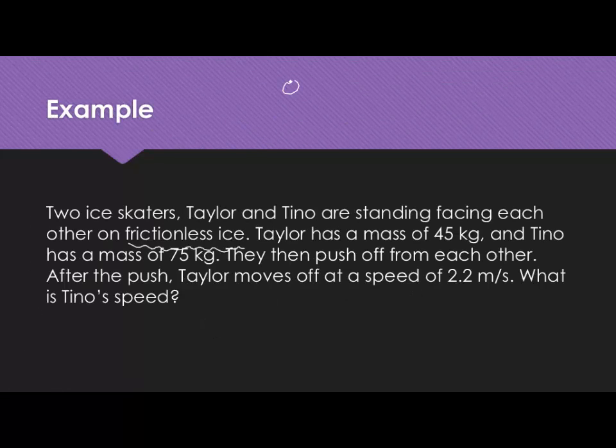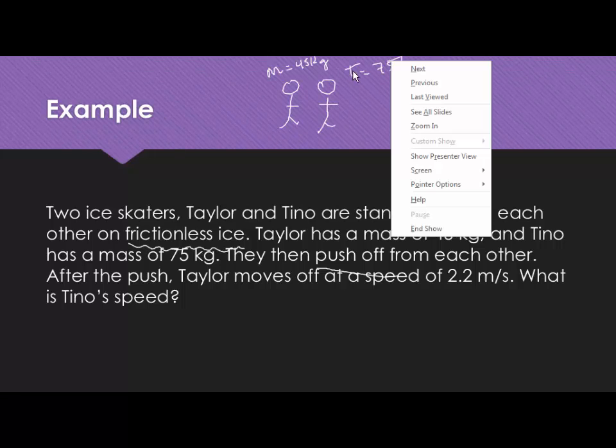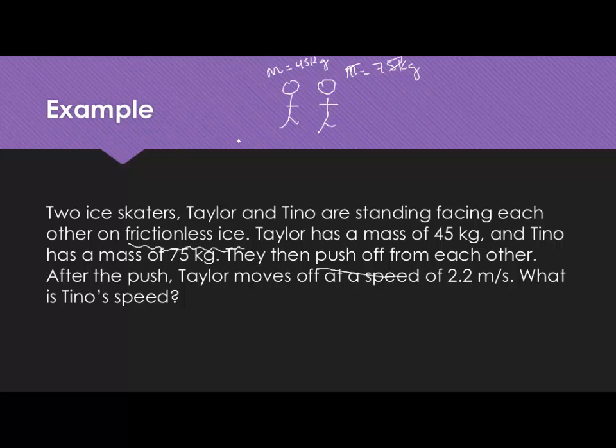There is just these two people standing facing each other and they are going to have an interaction between them being this push. They are going to push off from one another. There's not a third person outside pulling them apart or pushing them one way. Taylor's mass is 45 kilograms and Tino's is 75. After they push off from one another, Taylor's going to move off at a speed of 2.2 meters per second, and they're asking us what is Tino's speed?